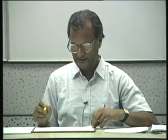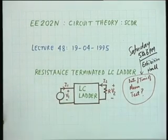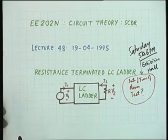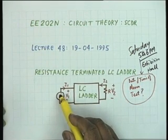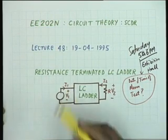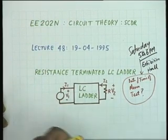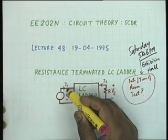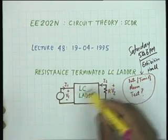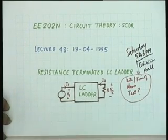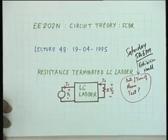This is the 48th lecture and we are going to discuss the synthesis of an LC ladder terminated at one end with a resistance, driven by either a voltage generator or a current generator. The transfer function could be any of the 4 types: V2 by I1 would be a transfer impedance, I2 by V1 would be a transfer admittance, V2 by V1 would be a voltage transfer function, and I2 by I1 would be a current transfer function.